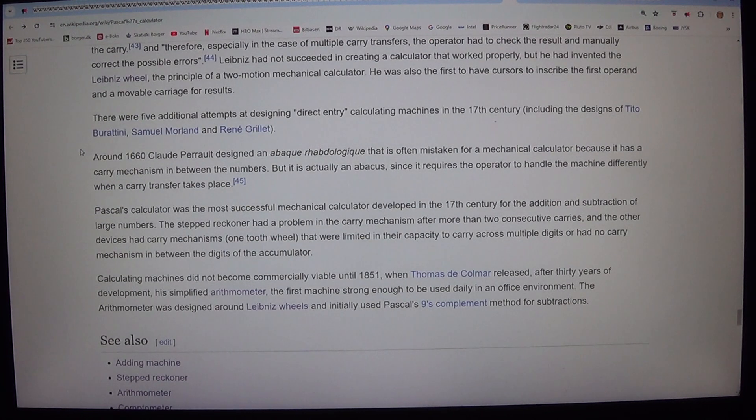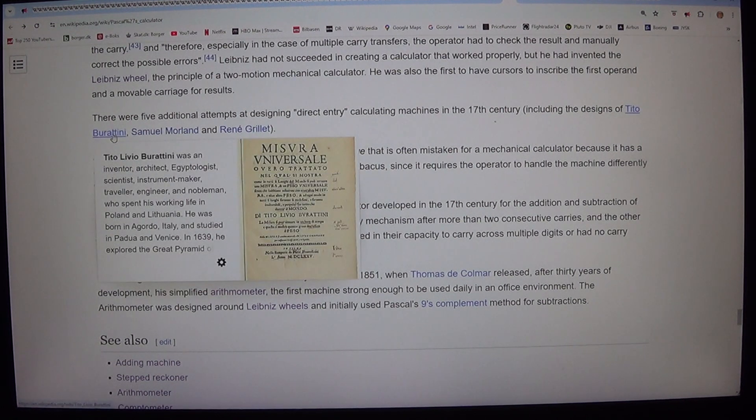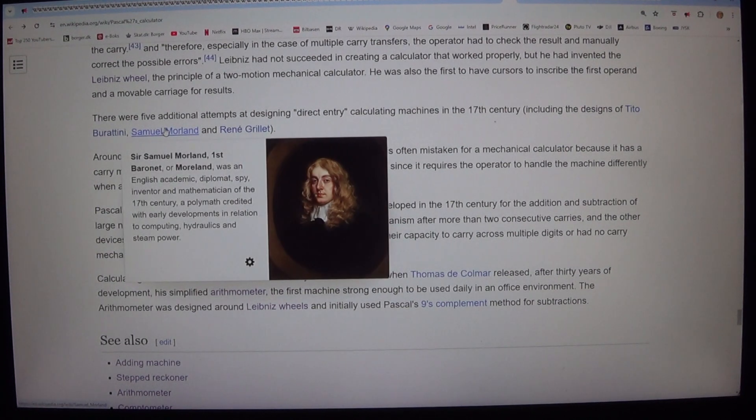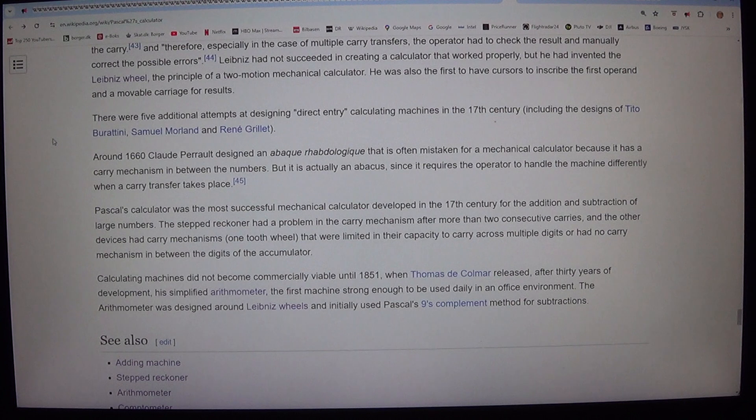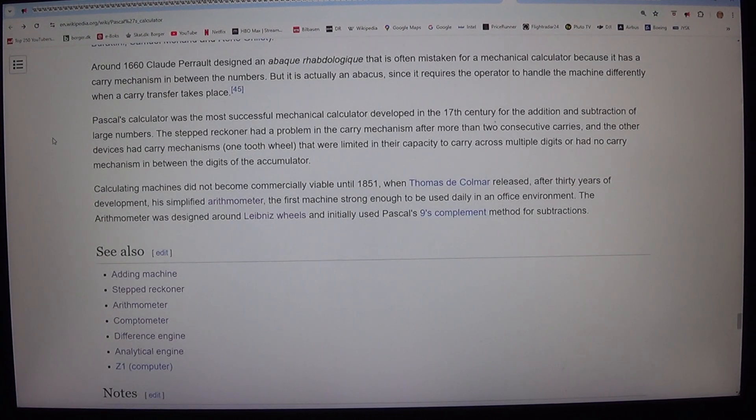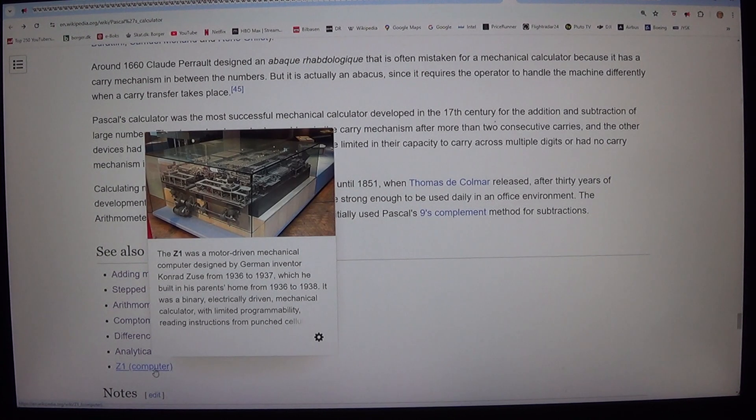There were five additional attempts at designing direct entry calculating machines in the 17th century, including the designs of Tito Burattini, Samuel Morland and René Grillet. Around 1660 Claude Perrault designed an abacus cryptology that is often mistaken for a mechanical calculator because it has a carry mechanism in between the numbers. But it is actually an abacus, since it requires the operator to handle the machine differently when a carry transfer takes place.